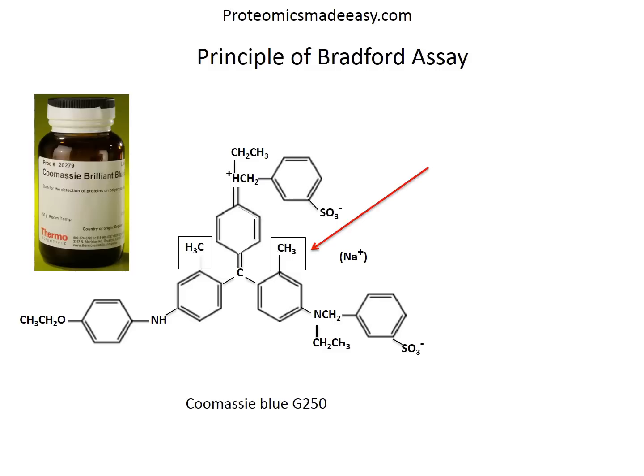If not bound to protein, the literature suggests the free dye can exist in four different ionic forms for which the pK values are 1.15, 1.82, and 12.4. The more cationic forms of the dye predominate in the acidic assay reagent solution and have absorbance maxima at 470 and 650 nm respectively. In contrast, the more anionic blue form of the dye, which binds to protein, has an absorbance maximum at 590 nm. Thus, the quantity of protein can be estimated by determining the amount of dye in the blue ionic form, usually achieved by measuring the absorbance of the solution at 595 nm.